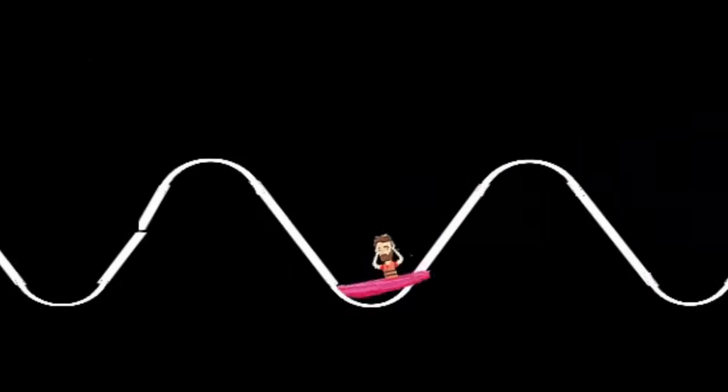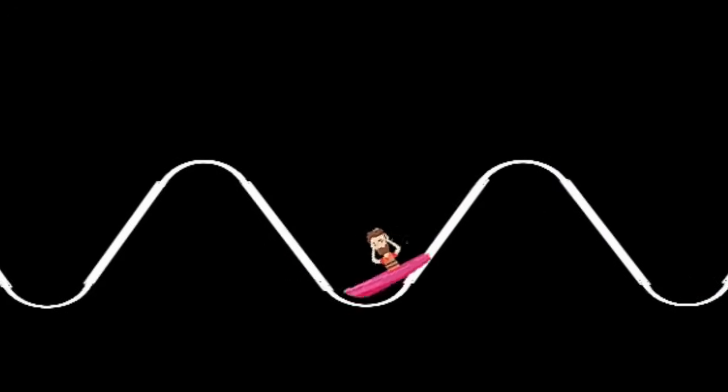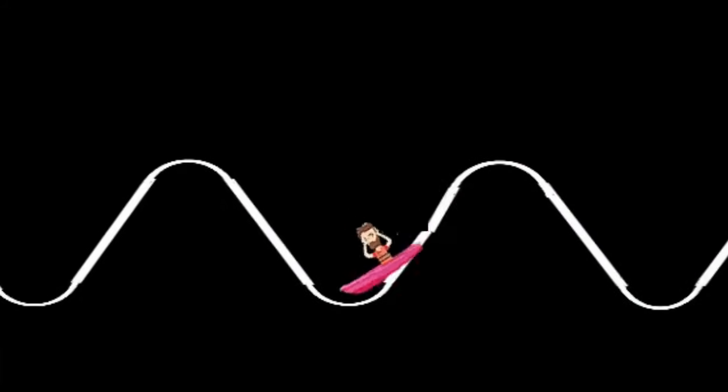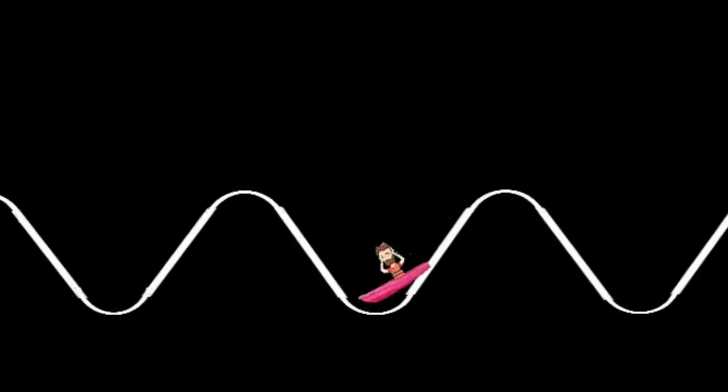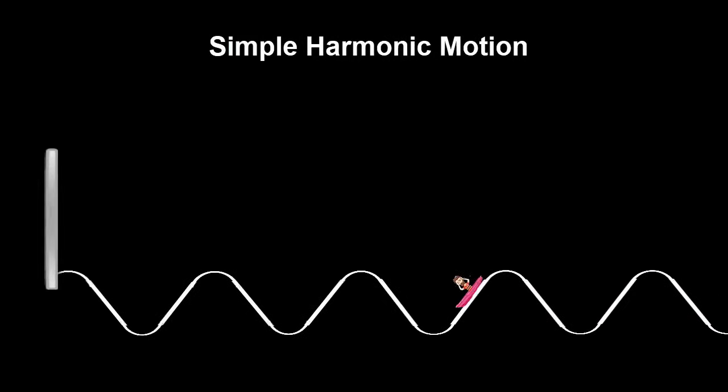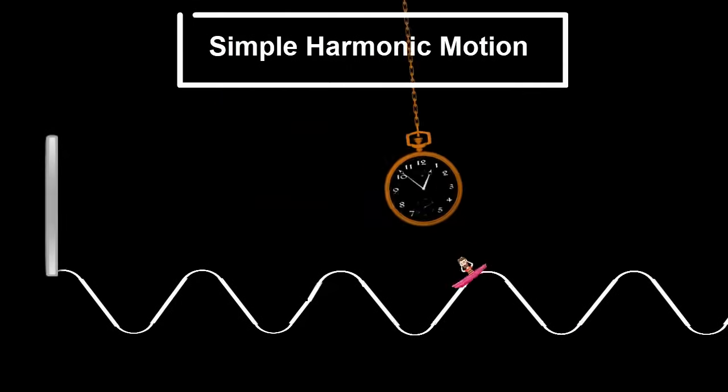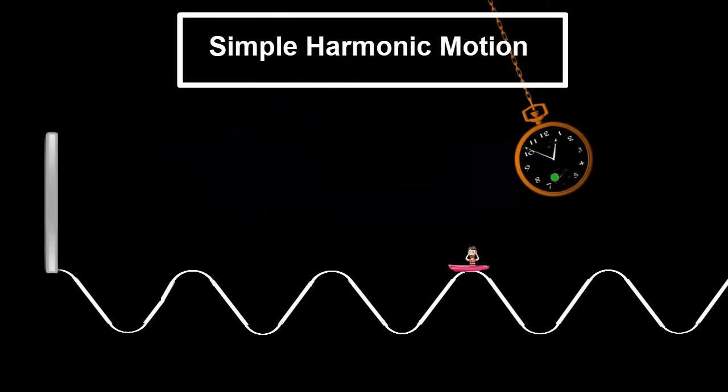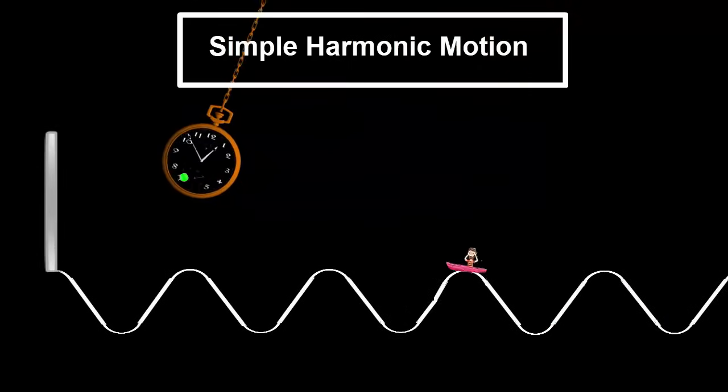But the boat's up and down speed changes, and you can see that it's moving fastest in the middle of its cycle. This cyclic type of movement is called simple harmonic motion, and we'll cover that later. A pendulum is another example of simple harmonic motion, although it moves horizontally instead of vertically.